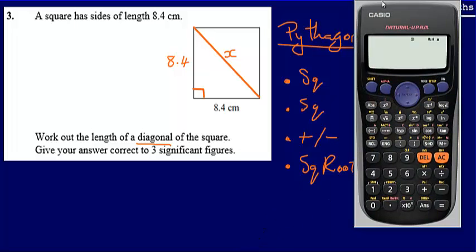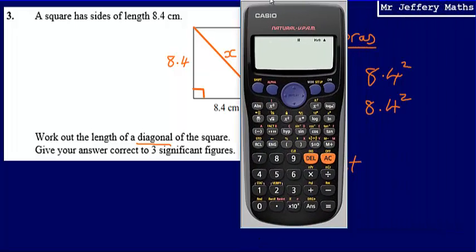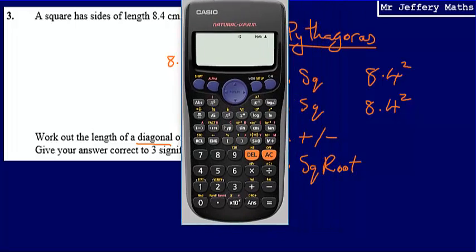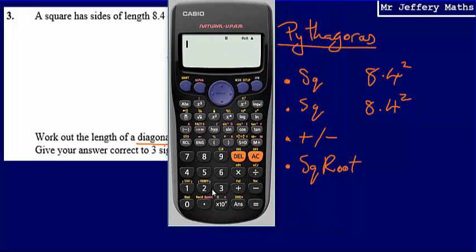So working this out on our calculator, this is going to give us 8.4 squared plus 8.4 squared. Remember that we're adding them together. And then we're going to take that answer and we are going to square root it. So square root our answer, and that is going to give us 11.87939392.